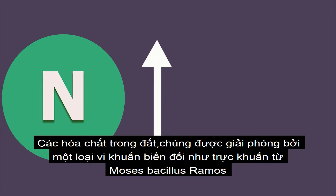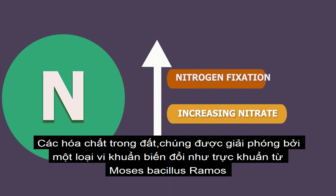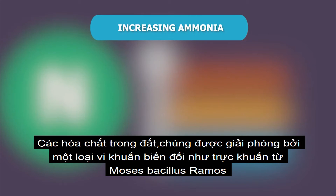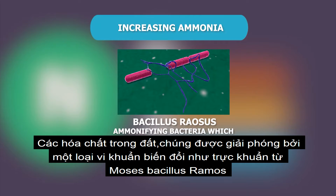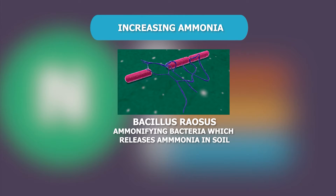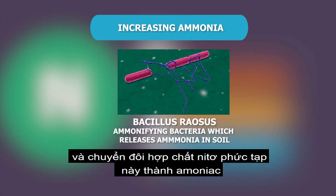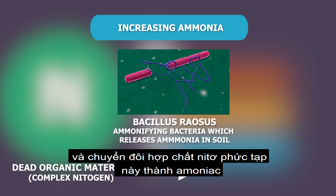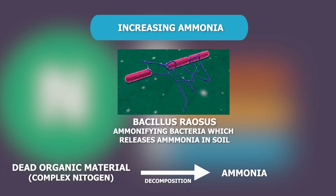Nitrogen in soil can be increased by increasing ammonia, nitrate, and fixing atmospheric nitrogen. First, by increasing ammonia. Ammonia is a nitrogen-based chemical. It is released in soil by ammonifying bacteria such as Bacillus rhomosis, which decomposes dead organic material and converts complex nitrogen compounds to ammonia.